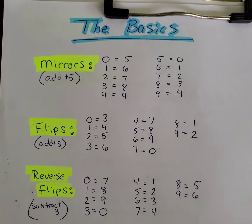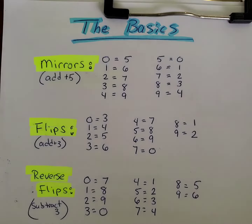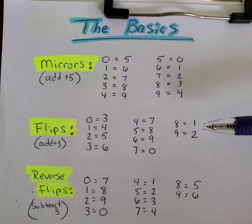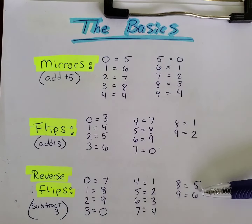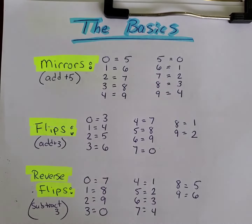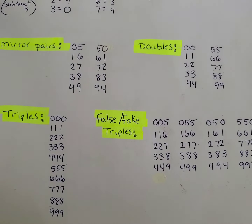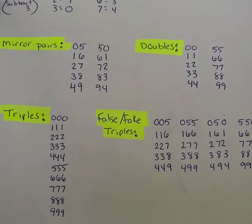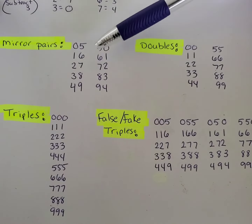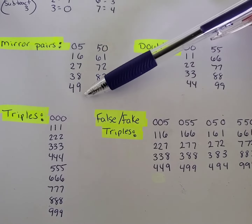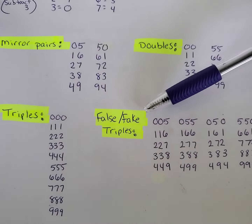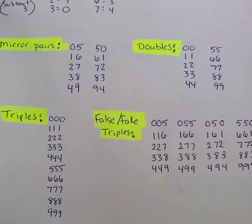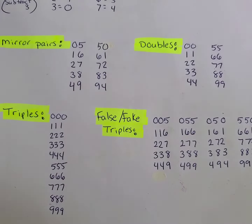We'll get into more details as we do more videos, but I just wanted to give you the basics — those are mirrors, those are what flip numbers are, and those are what reverse flips are. Now we have mirror pairs, doubles, triples, and fake or false triples. I'm going to cover each of these.